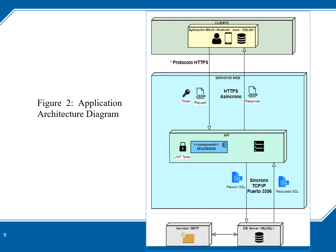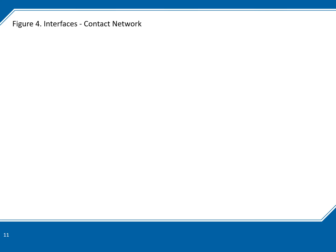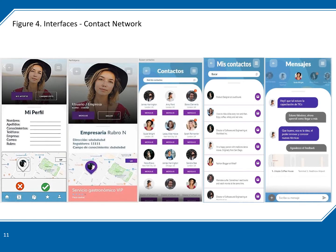Application architecture diagrams show the start of the application, the interface contact network, MyProfile contacts, and MyContacts messaging.